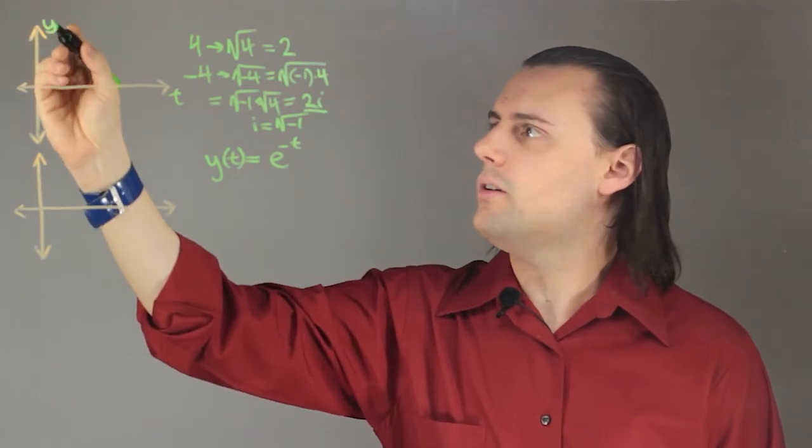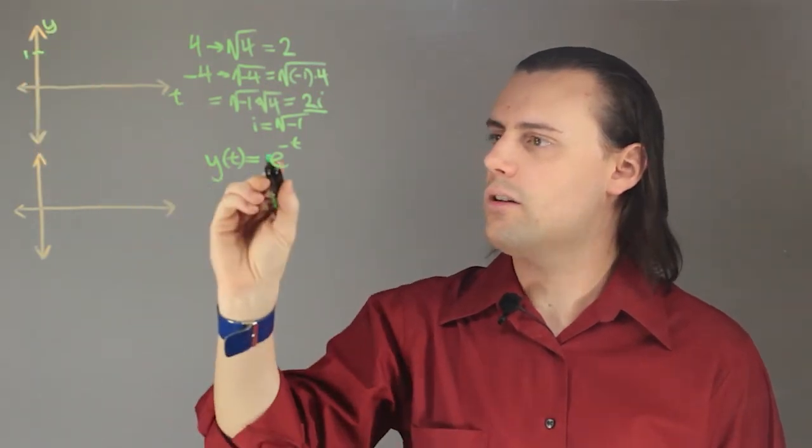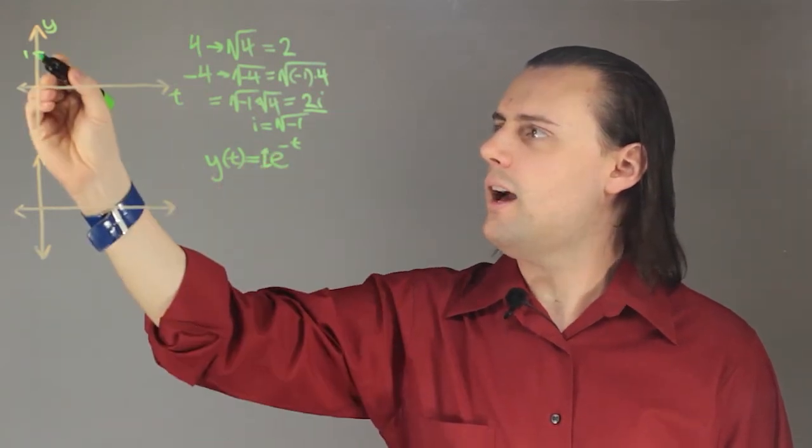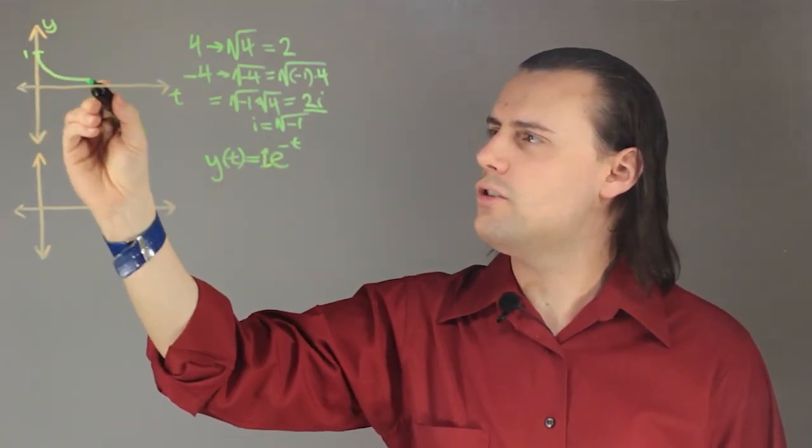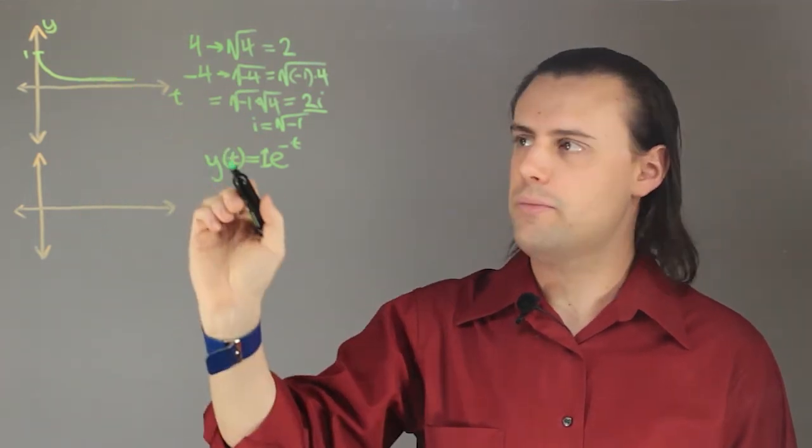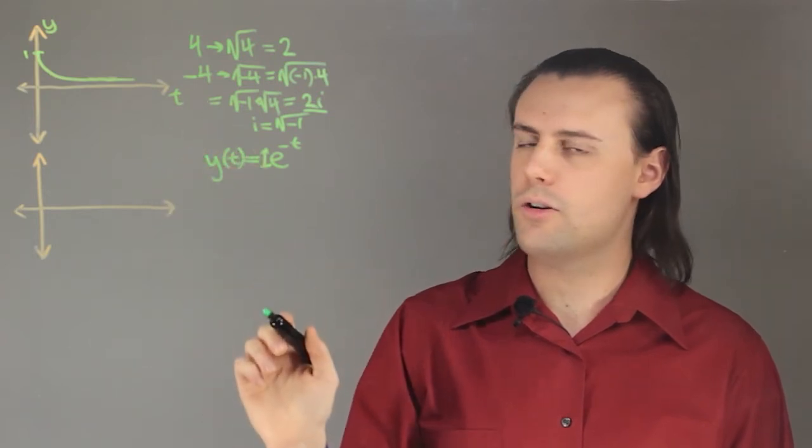So here, I'm going to start off at 1, because that's the number in front, and this function is going to decay in an exponential manner. Eventually, it'll reach 0 at the limit when time goes to infinity.